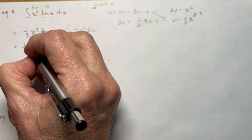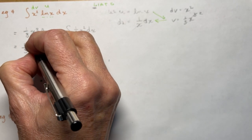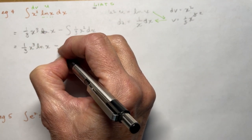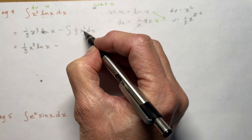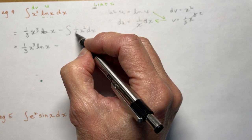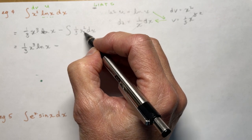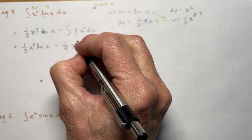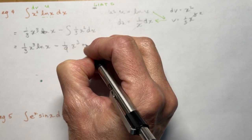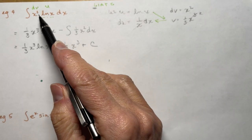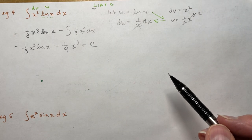So minus (1/3)x²·dx. This is going to be easy to finish. The integral of x²: I add 1, I divide by 3 — so that's (1/9)x³. So the final answer is (1/3)x³·ln(x) minus (1/9)x³ plus c. I guess you could go through and take the derivative and see if you get this back.